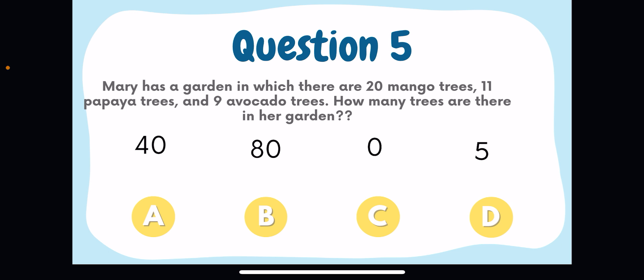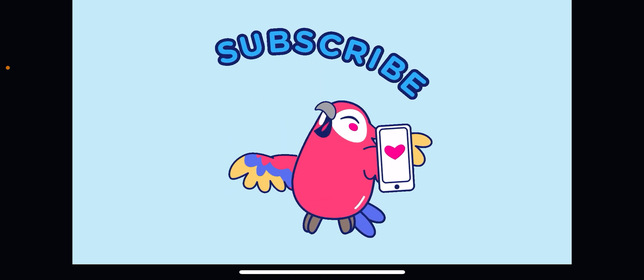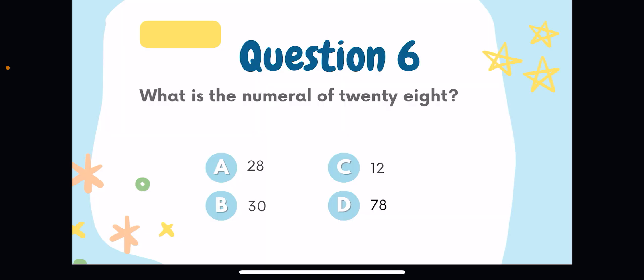Question number five: Mary has a garden with 20 mango trees, 11 papaya trees, and 9 avocado trees. How many total trees are in her garden? Add 20 plus 11, which is 31, then add 9 to get 40. Option A, 40, is the answer. If you like the video and explanation, please subscribe, like, and share with your friends.